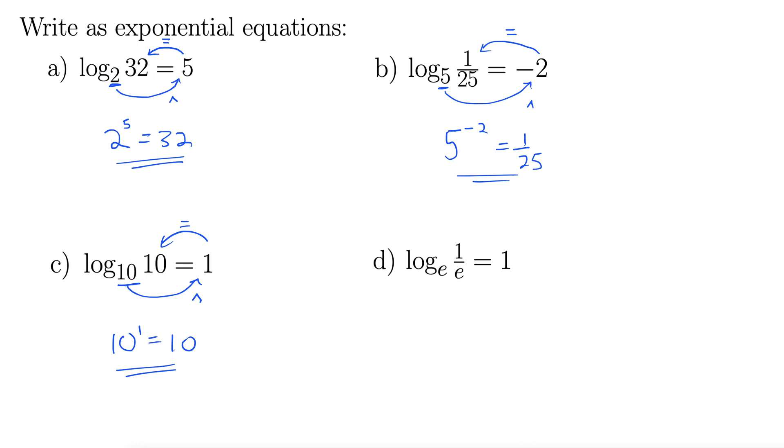We have log base e of 1 over e equals 1. And if you haven't seen e before, e is one of those very special numbers in math, kind of like pi. It was discovered much later than pi, but we call it a transcendental number.